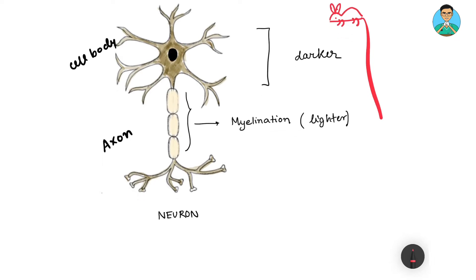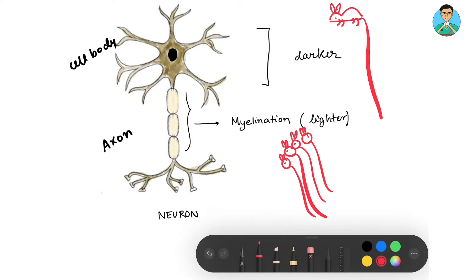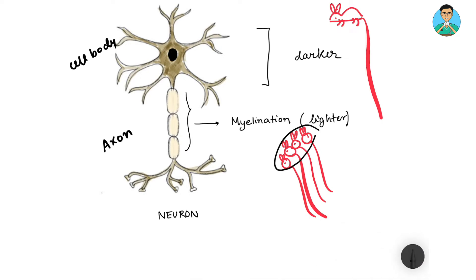Now if I draw a lot of rats together, the collection of the bodies of the rats will form my gray matter. This will form my gray matter.